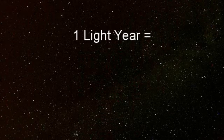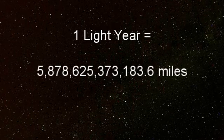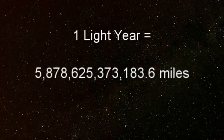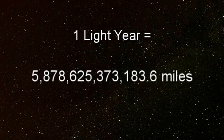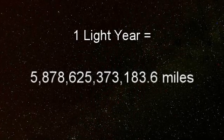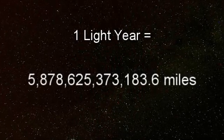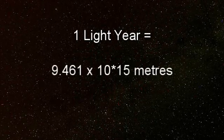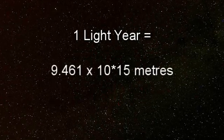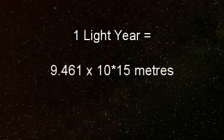Most people are familiar with the term 'light year.' A light year is the distance light travels in one year: 5,878,625,373,183.6 miles, or 9.461 × 10¹⁵ meters.